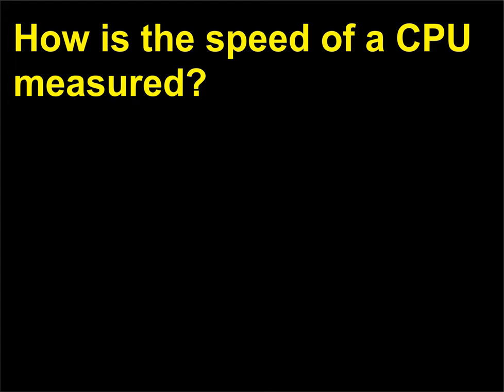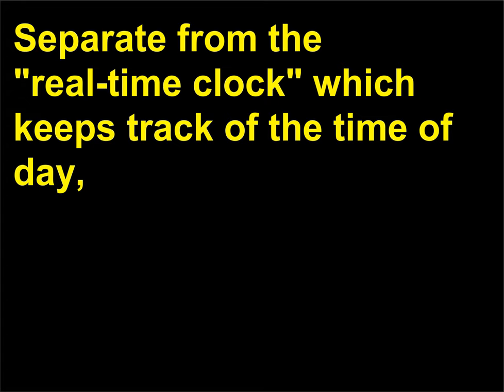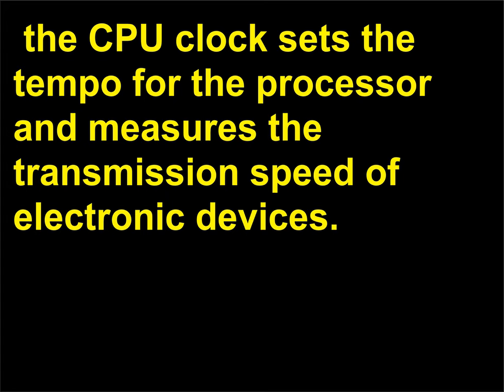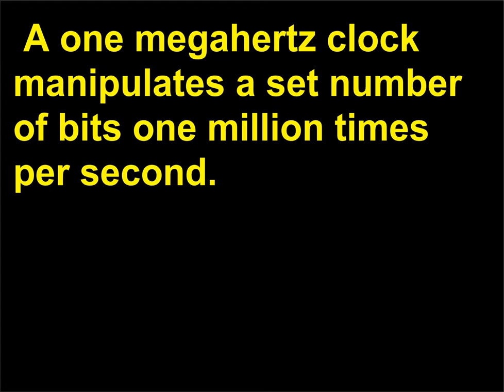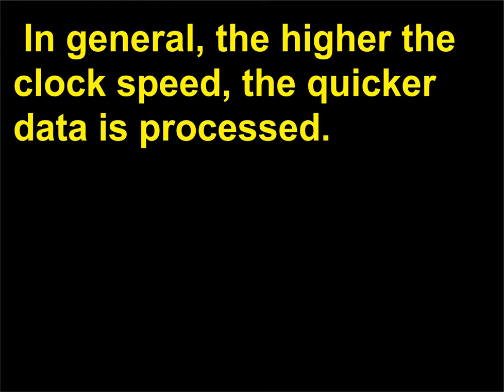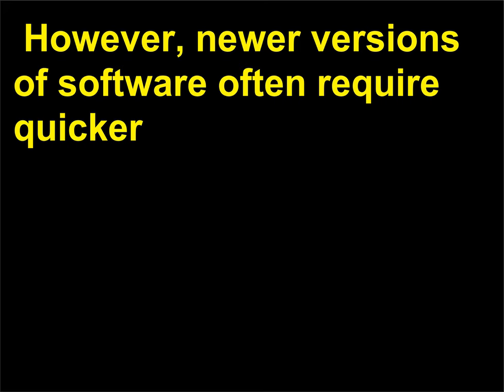How is the speed of a CPU measured? Separate from the real-time clock which keeps track of the time of day, the CPU clock sets the tempo for the processor and measures the transmission speed of electronic devices. The clock is used to synchronize data pulses between sender and receiver. A 1 MHz clock manipulates a set number of bits 1,000,000 times per second. In general, the higher the clock speed, the quicker data is processed.